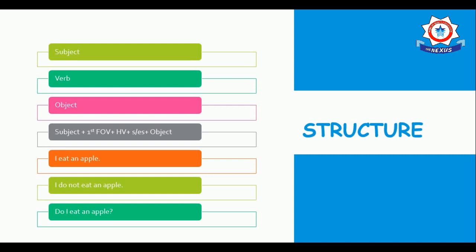S/ES is not used here with 'I', but we will discuss where to add S or ES. When I convert this into a negative sentence: 'I do not eat an apple.' And the interrogative form is: 'Do I eat an apple?'